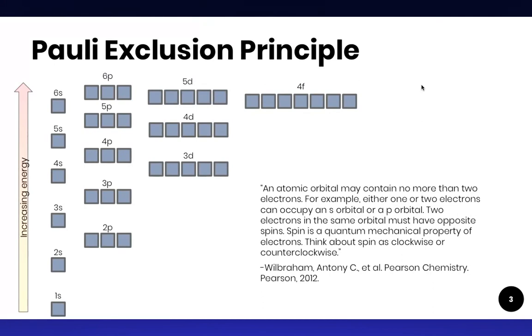Building off of Aufbau's idea, a scientist by the name of Pauli came up with the Pauli exclusion principle. In this principle he said, an atomic orbital may contain no more than two electrons. We talked about that part last time. For example, either one or two electrons can occupy an s orbital or a p orbital. Two electrons in the same orbital must have opposite spins. Spin is a quantum mechanical property of electrons. Think about spin as clockwise or counterclockwise.